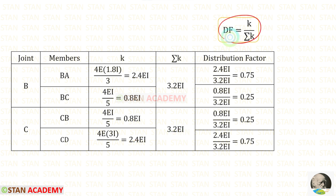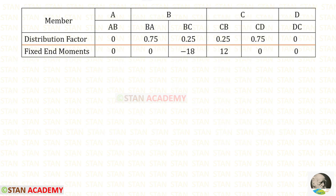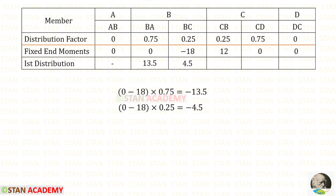Using the distribution factor formula, we can find the distribution factors. Now let us start making the moment distribution table, entering all members, distribution factors, and fixed-end moments. Let us do the first distribution in joint B by adding the two fixed-end moments and multiplying with the distribution factors. We are getting negative values, so we enter them as positive.